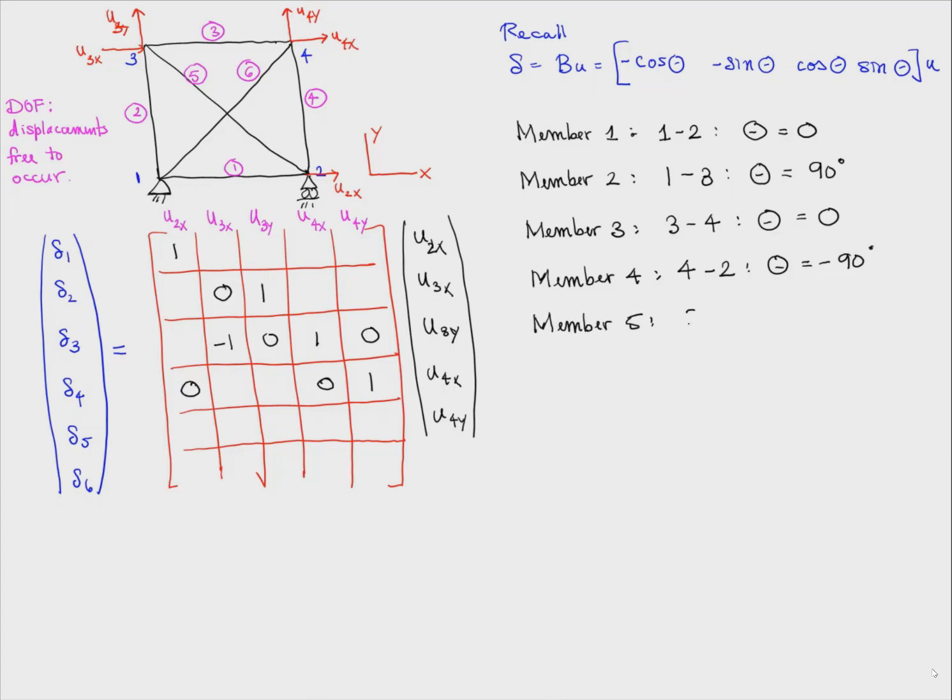Number 5, number 6. And notice here that we have arbitrarily chosen member 6 as going from joint 1 to joint 4. Also, think about what happens if we pick instead that member 6 goes from 4 to 1. We should get the same answer, but that's just something to think about so we understand it well.